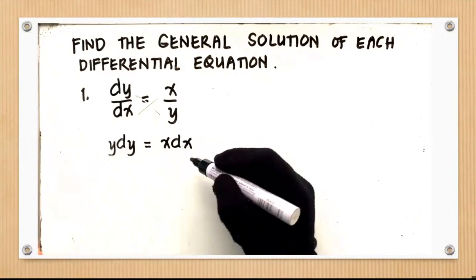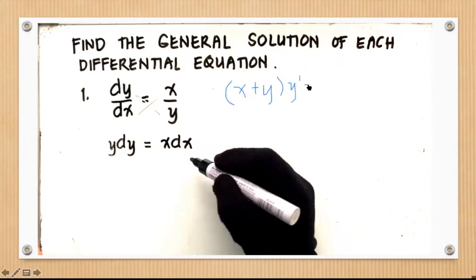An example of a DE that cannot be separated: y prime equals (x + y) — you cannot factor that. When there are trigonometric, exponential, or logarithmic functions involving both x and y together that cannot be factored into separate x and y parts, the equation is not separable.